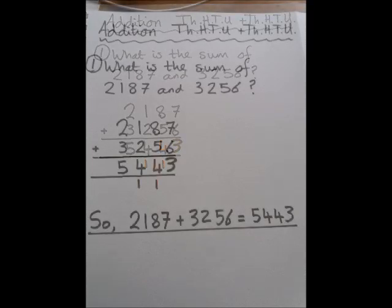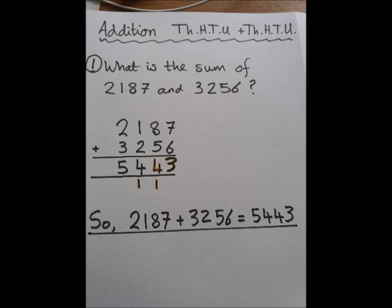And then finally, 2 add 3 makes 5, so 2187 plus 3256 equals 5443.